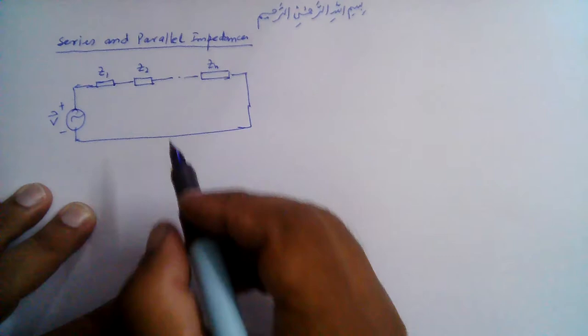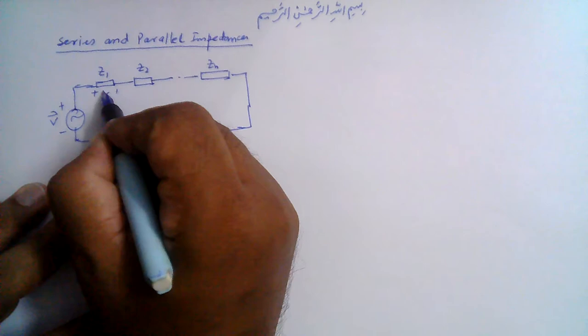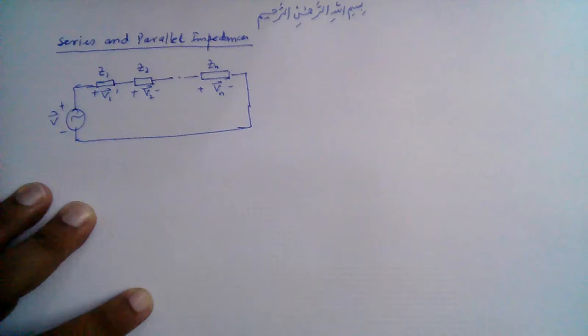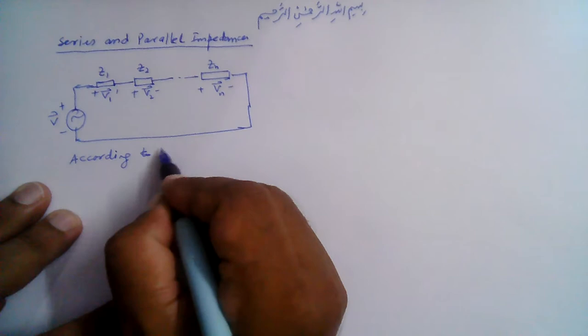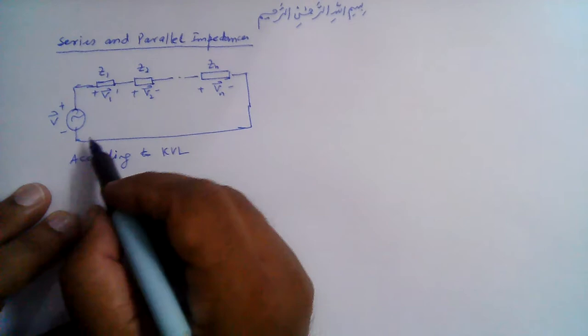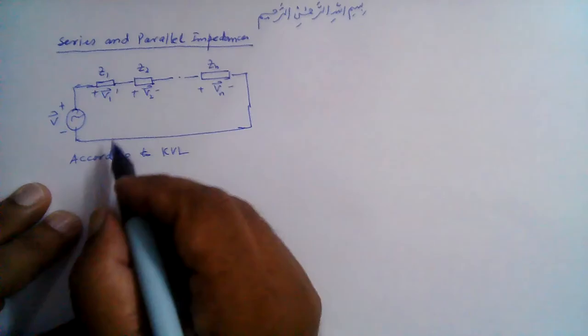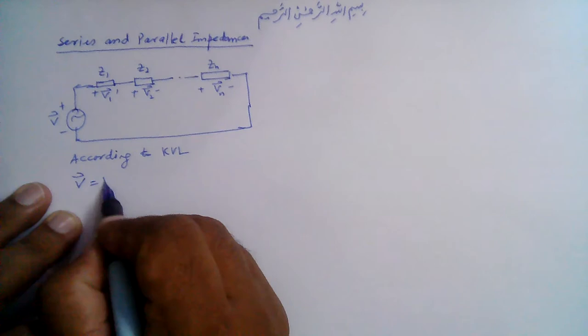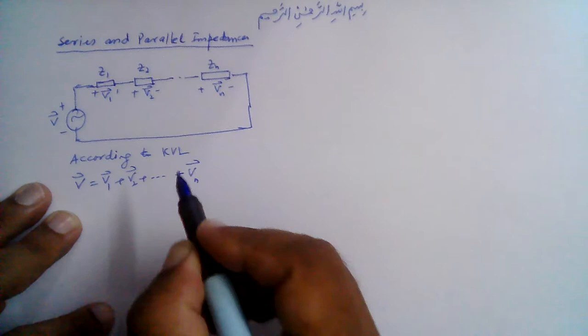Let's assume the voltage drop across z1 is v1, represented using a phasor; this is v2, and here the voltage is vn. According to KVL — Kirchhoff's Voltage Law — the sum of all the voltages in a loop is zero, so the voltage rise v-bar is equal to v1 plus v2 and so on till vn.